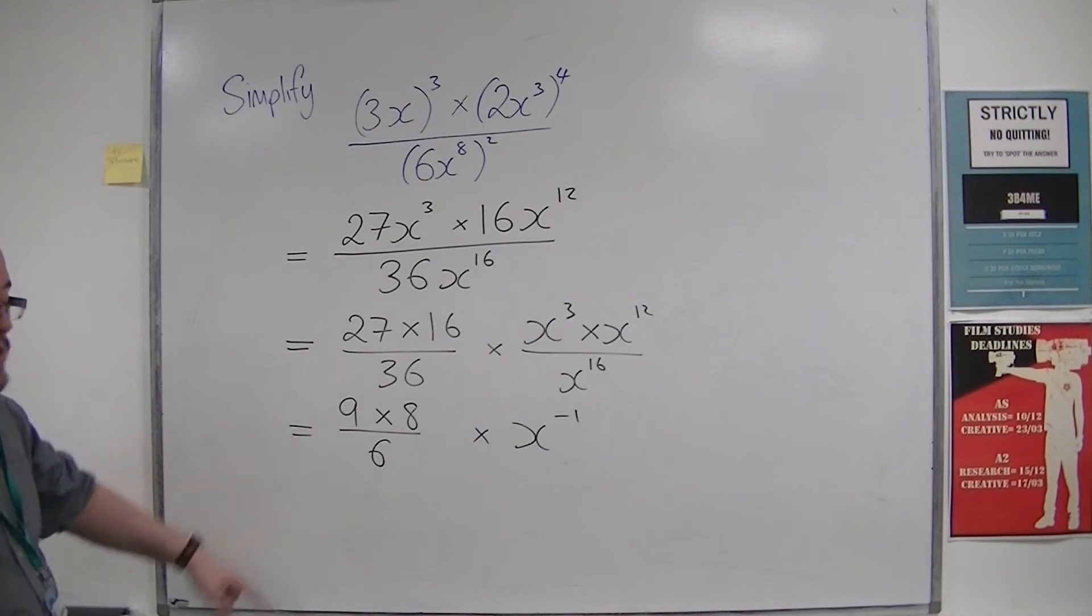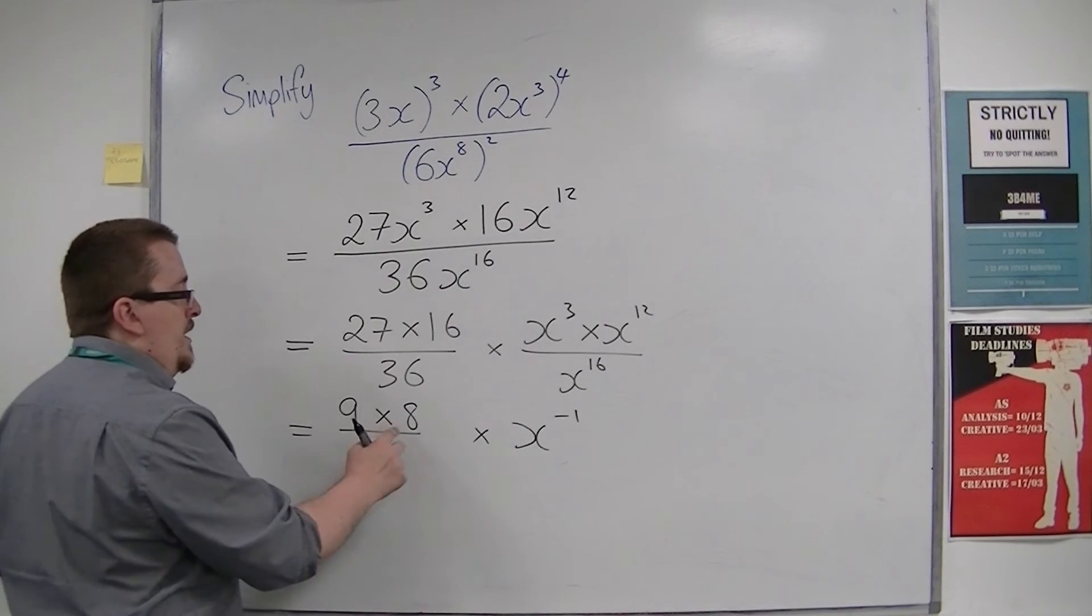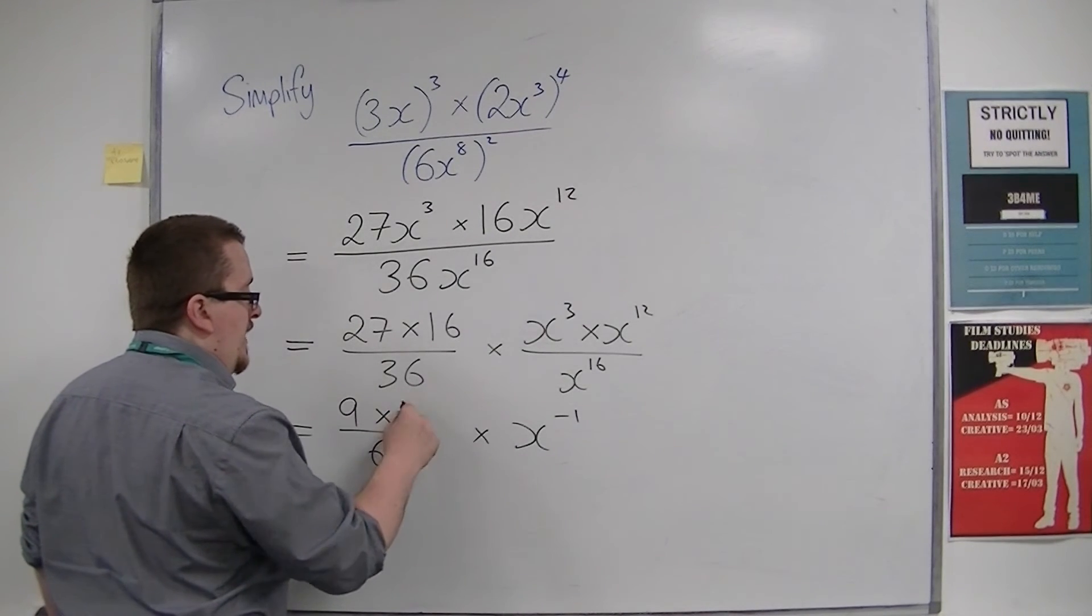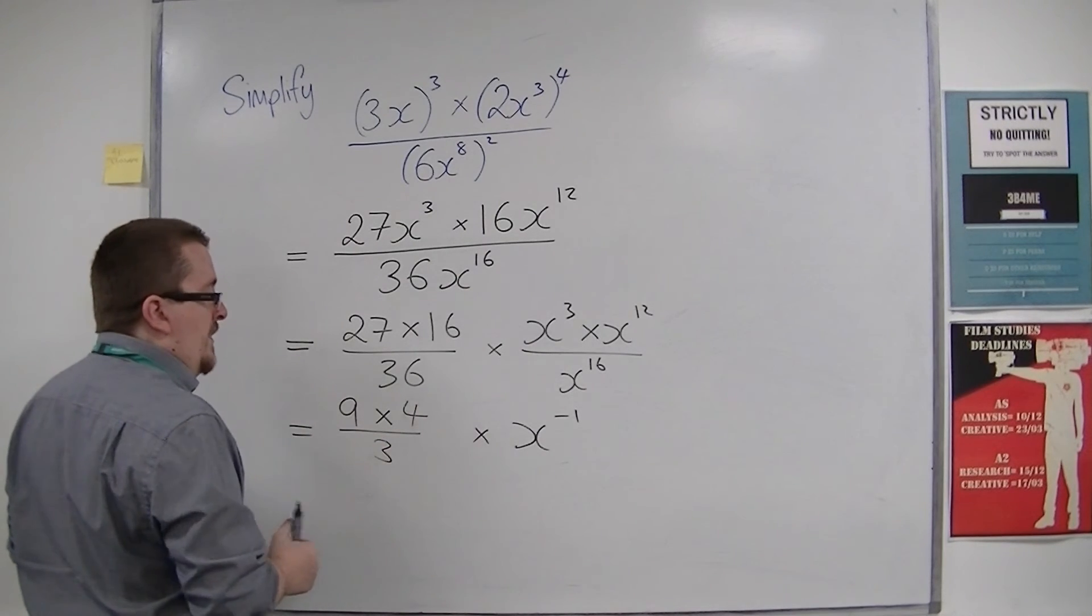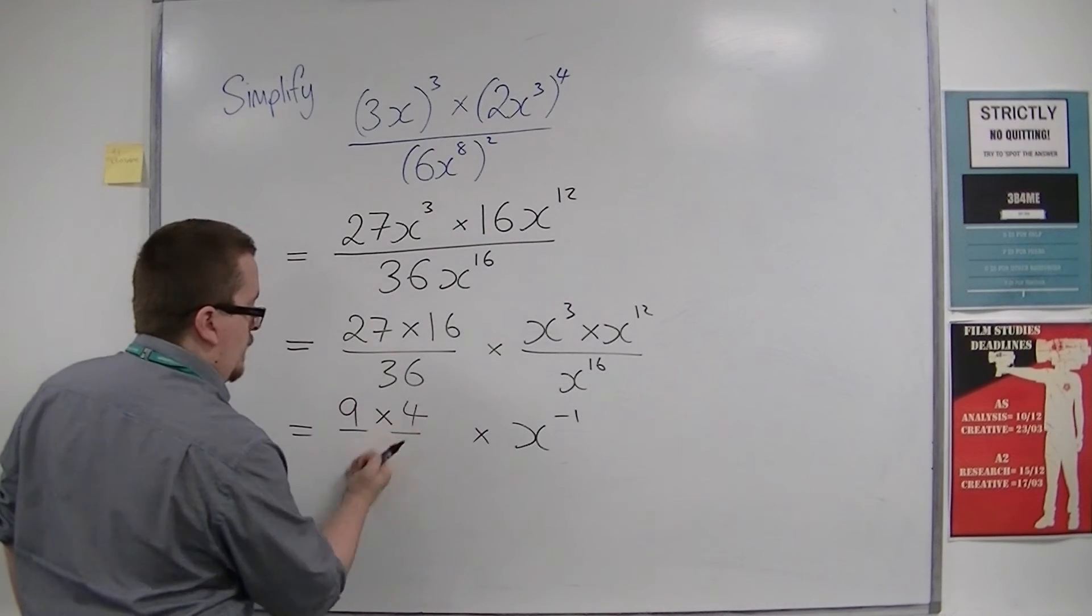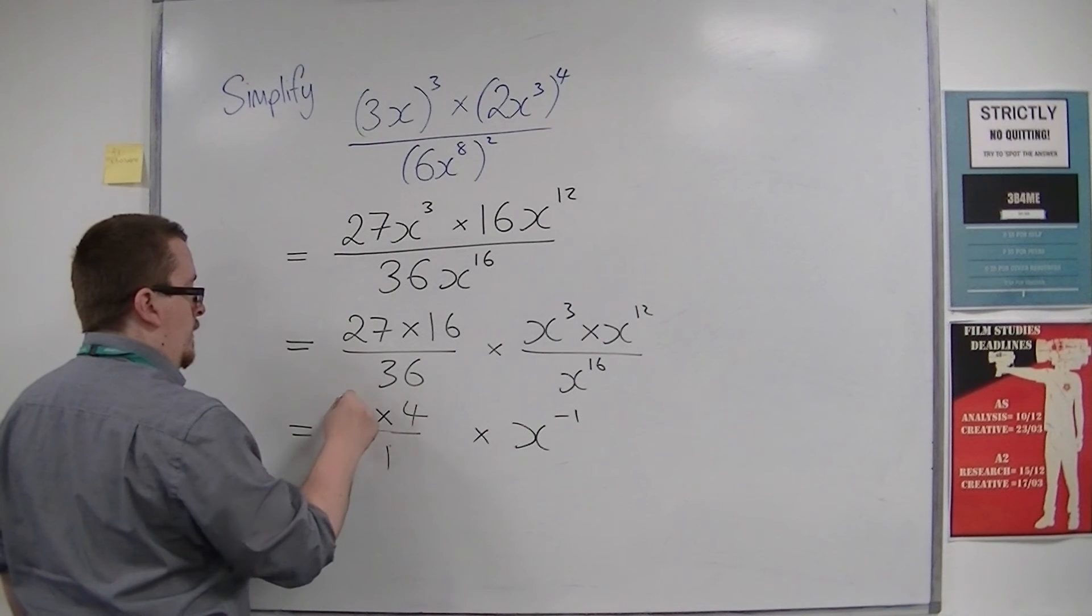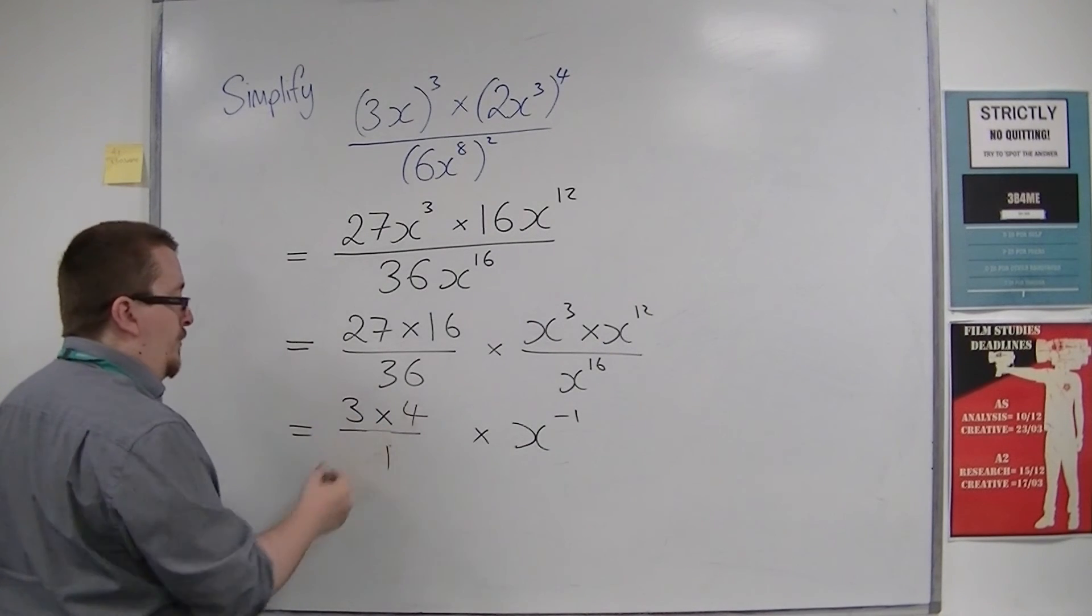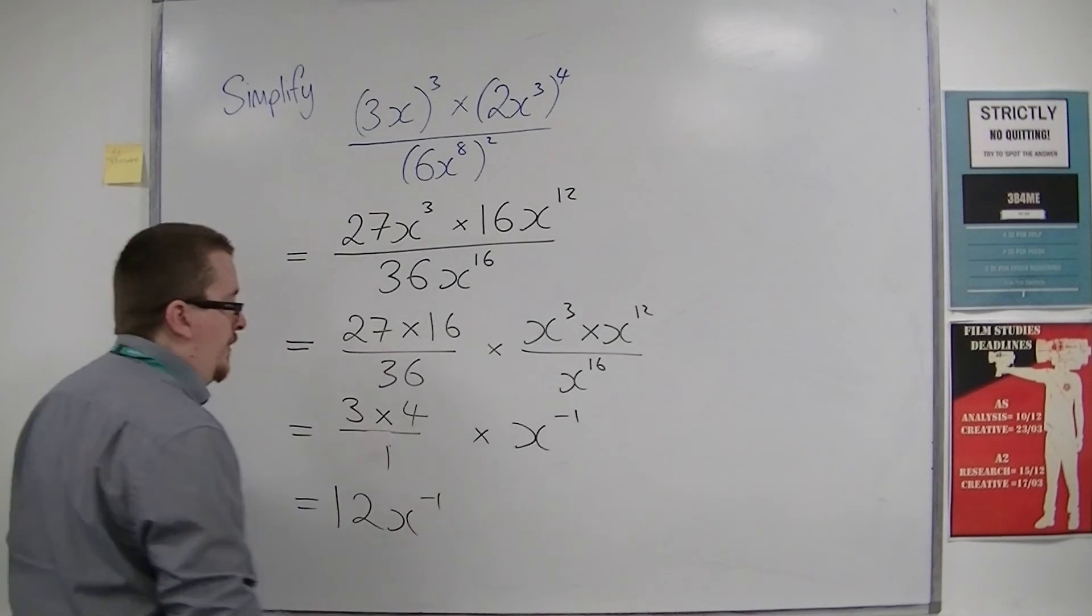Now, can we simplify that any further? Well, we could divide top and bottom by another 2. So divide that by 2. Divide that by 2. Then we could divide top and bottom by 3. And so we're left with 3 times 4, which is 12, x to the minus 1.